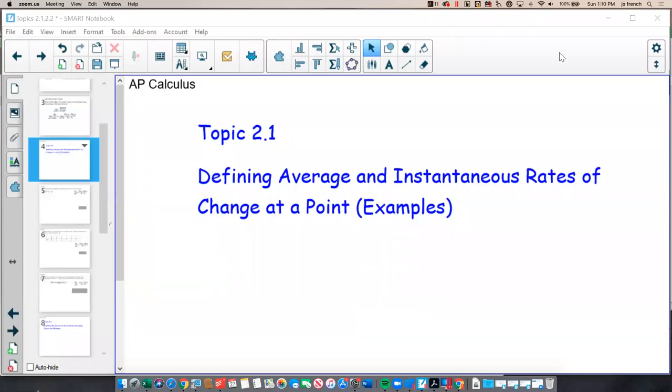Greetings. I'm Joe French, and I'm coming to you from my classroom in Mount Pleasant, Utah. This is Topic 2.1, Defining Average and Instantaneous Rates of Change at a Point. These are some examples of how we might use the concept in some questions.